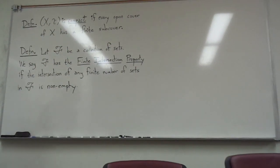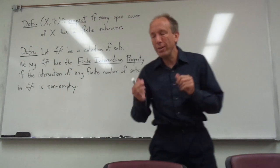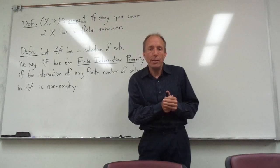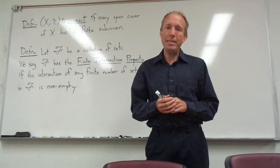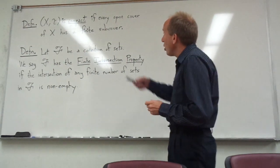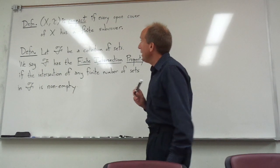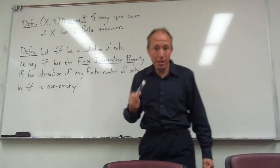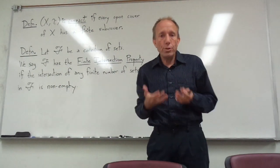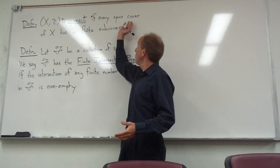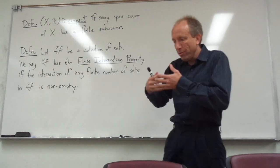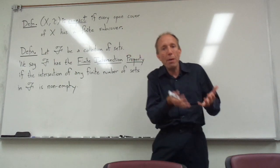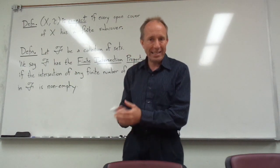Hi guys. I just thought I would step in here and give you a brief talk about a way of thinking about compactness that involves closed sets instead of open sets. Recall the definition of a compact topological space: it's one for which every open cover of X has a finite subcover. That of course is a description based on open sets, so it might be natural to wonder: is it possible to describe compactness using closed sets instead?